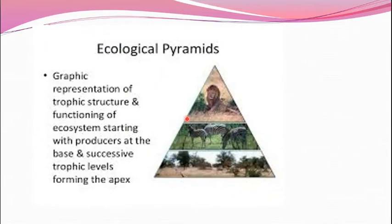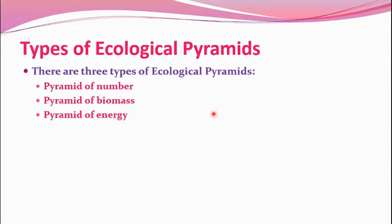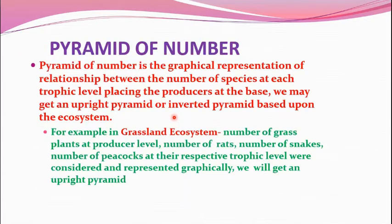The next functional component is ecological pyramids — a graphical representation of the trophic structure and functioning of an ecosystem, starting with producers at the base and successive trophic levels forming the apex. There are three types: pyramid of number, pyramid of biomass, and pyramid of energy. First, pyramid of number.